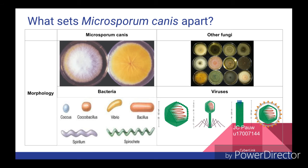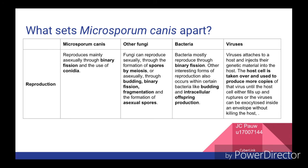Bacteria occur in five basic shapes: Cocci, Bacilli, Spirillae, Vibrios and Spirochaetes. Viruses also have a few basic structures: helical structures, complex structures, icosahedral structures, and a viral structure surrounded by a viral envelope. When looking at reproduction, Microsporum canis reproduces mainly through asexual binary fission and by spreading out with conidia. Other fungi reproduce sexually by forming sexual spores, or asexually by budding, binary fission, fragmentation or the formation of asexual spores.